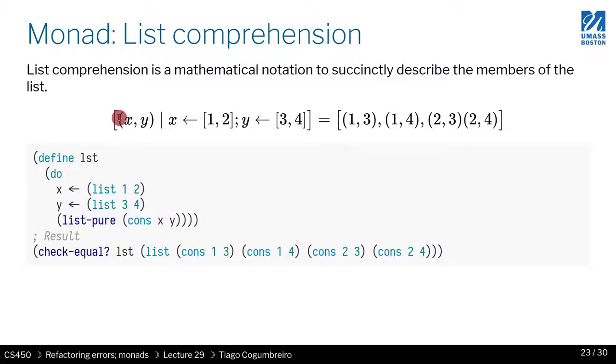As you can see, pretty standard way to declaratively specify how you build a list. So the contents of that would be 1, 3, 1, 4, 2, 3, and 2, 4, according to how you evaluate first x and then y.